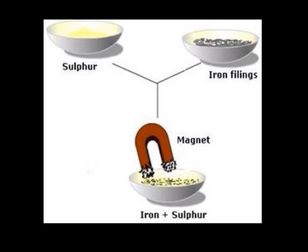If I take a mixture of sulfur and iron filings and mix them together right down here, I can actually separate them using a magnet. If I use a magnet on the mixture of iron and sulfur, it's only going to pick up the iron, and so all that will be left in the dish is sulfur.